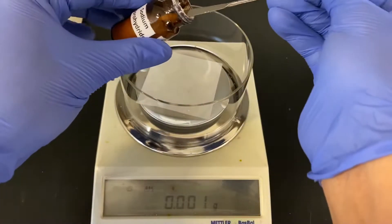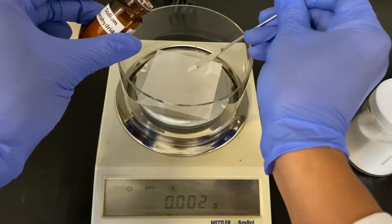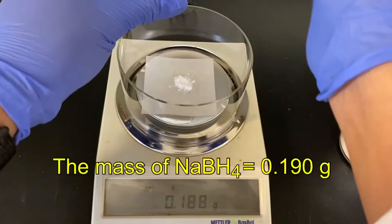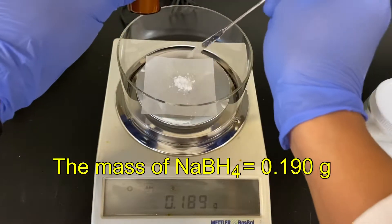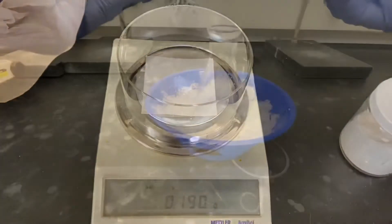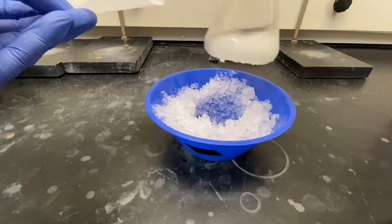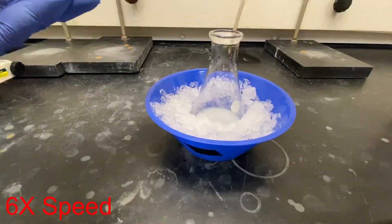While the mixture chills in the ice bath, mass the reducing agent, sodium borohydride. The mass of sodium borohydride used was 0.190 grams. Add the sodium borohydride in portions to the chalcone mixture. Swirl to mix during the addition.